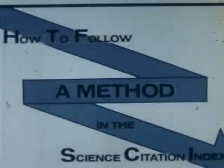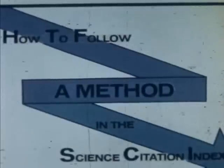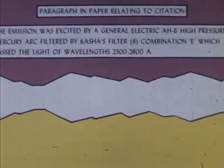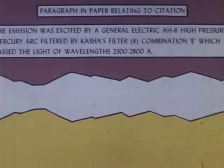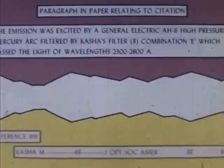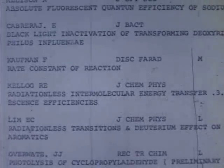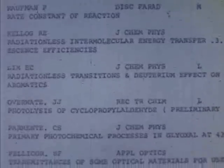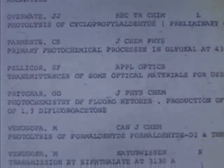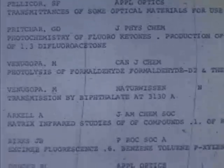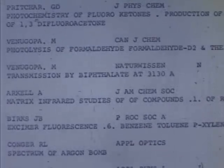The citation index is ideally suited for searching methodology. Consider this quotation from the Diamant paper, where Kasha's filter is mentioned. Simply look up the reference for Kasha's original paper from the 1948 Journal of the Optical Society, and you obtain a complete bibliography of papers in which that method has been employed. These papers appeared in a wide variety of journals, and you would have searched the whole spectrum of traditional discipline-oriented indexing services in vain to find most of these papers. Using the SEI, the complete search was done by a clerk in about 30 minutes.